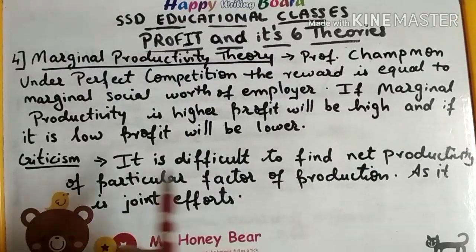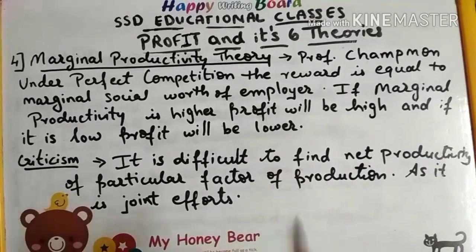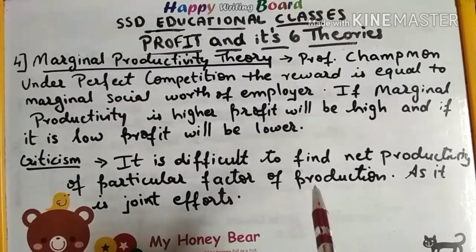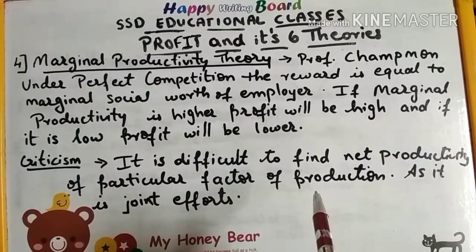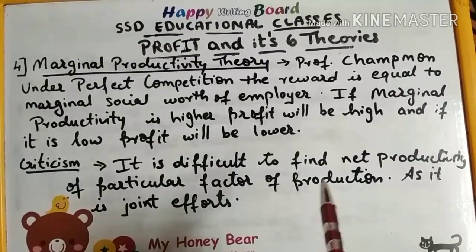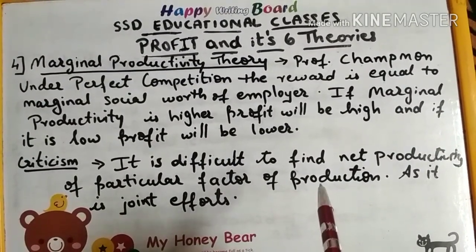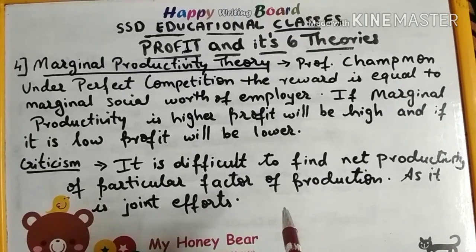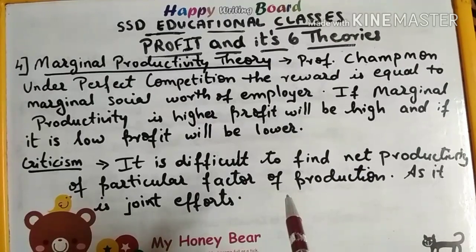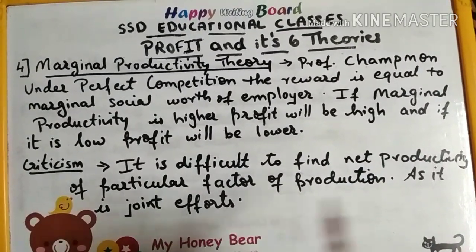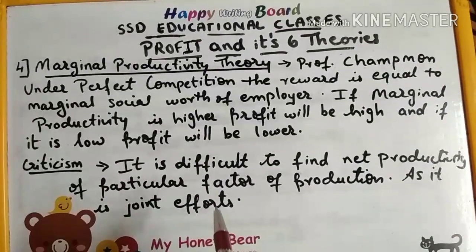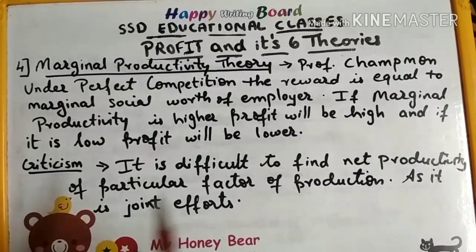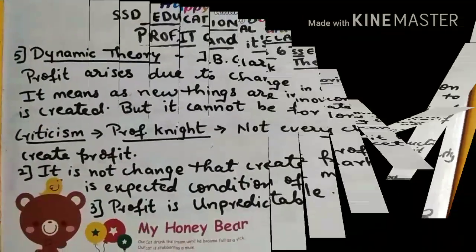Criticism of the Marginal Productivity Theory: it is difficult to find the net productivity of a particular factor of production, because production involves joint effort by all four factors — land, labor, capital, and entrepreneur. Since production is a combined result, we cannot determine exactly how much profit should be attributed to the entrepreneur alone.